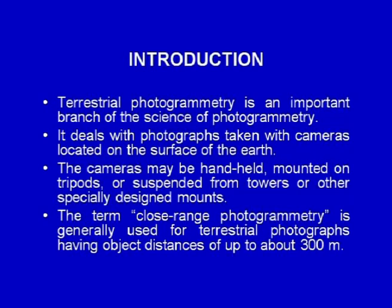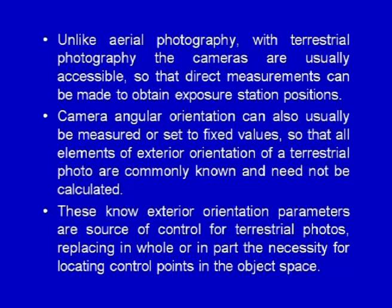The term close range photogrammetry is generally used for terrestrial photographs having object distances up to 300 meters. Unlike aerial photographs, with terrestrial photography the cameras are usually accessible, so that direct measurements can be made to obtain exposure station positions. Camera angular orientation can also usually be measured or set to fixed values, so that all elements of exterior orientation of a terrestrial photograph are commonly known and need not be calculated. These known exterior orientation parameters are a source of control for terrestrial photographs, replacing in whole or in part the necessity for locating control points in the object space.